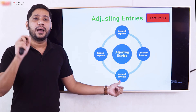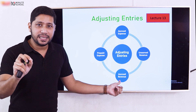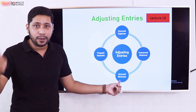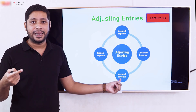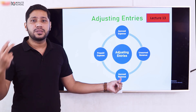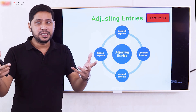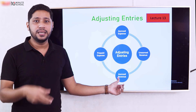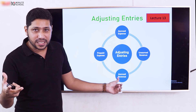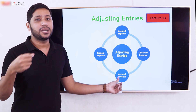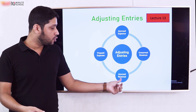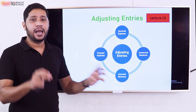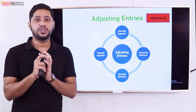Accrued revenue means that a service has been provided, like when a doctor provides a service, but payment has not yet been received. It is similar to accounts receivable, making it an asset. On the accrual basis, the revenue has been earned, even though cash will be collected in the future. So accrued revenue is an asset.